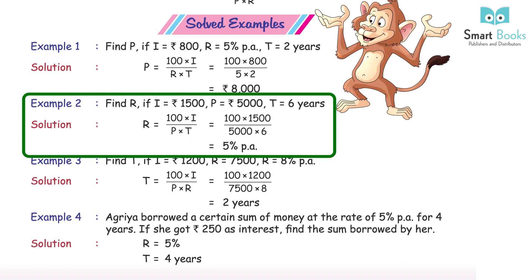Example 2: Find R if I = Rs 1,500, P = Rs 5,000, T = 6 years. Solution: R = 100 × I ÷ (P × T) = 100 × 1,500 ÷ (5,000 × 6) = 5% PA.